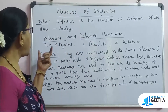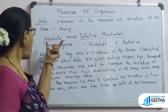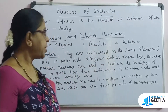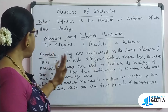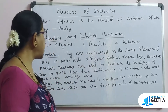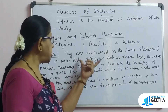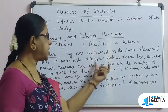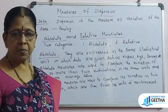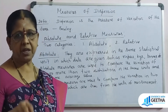There are two types of measures of dispersion, namely absolute measures and relative measures. Absolute measures are expressed in the same unit in which the original data is measured or given, such as rupees or kilograms. Absolute measures are expressed in the same unit of measurement.